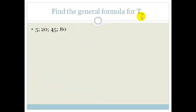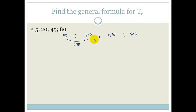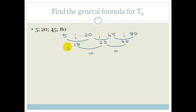Let's use this information. It says find the general formula for tn given: 5, 20, 45, and 80. So: 20 minus 5 is 15, 45 minus 20 is 25, and 80 minus 45 is 35 — those are first differences. Then 25 minus 15 is 10, and 35 minus 25 is 10. So we can say this is definitely a quadratic sequence. We're going to use what we've just learned — this is the second difference.